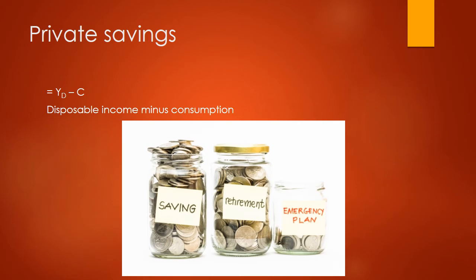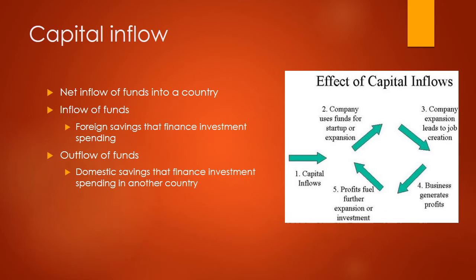Private savings is defined as disposable income minus consumption. That's everything left over after consumption from our disposable income — we either save or consume it.